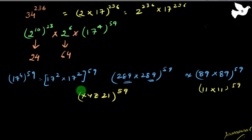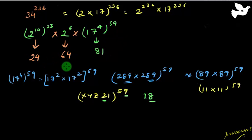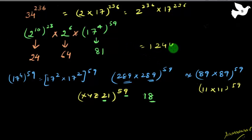So combining everything: the last two digits of the entire expression 34^236 are the product of 24 (from 2^10 part), 64 (from 2^6), and 81 (from 17^236). Multiplying: 24 × 64 × 81. Computing 24 × 64 = 1536, then 1536 × 81. Taking last two digits: 36 × 81 = 2916, giving last two digits 16. The answer is 16.